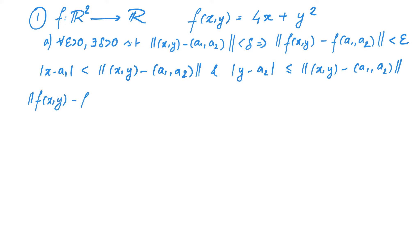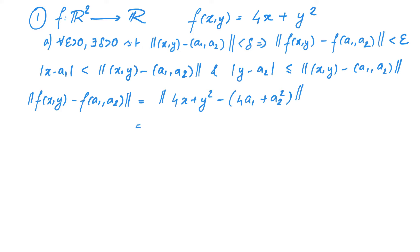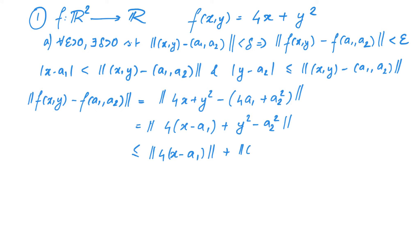Therefore, the moment ‖(x,y) − (a₁,a₂)‖ < δ, |x − a₁| and |y − a₂| will be less than δ. Now let us look at |f(x,y) − f(a₁,a₂)|. This is equal to |4x + y² − (4a₁ + a₂²)|. We can simplify this as |4(x − a₁) + (y² − a₂²)|, which by the triangle inequality is less than or equal to |4(x − a₁)| + |y − a₂||y + a₂|, using the identity a² − b² = (a − b)(a + b).